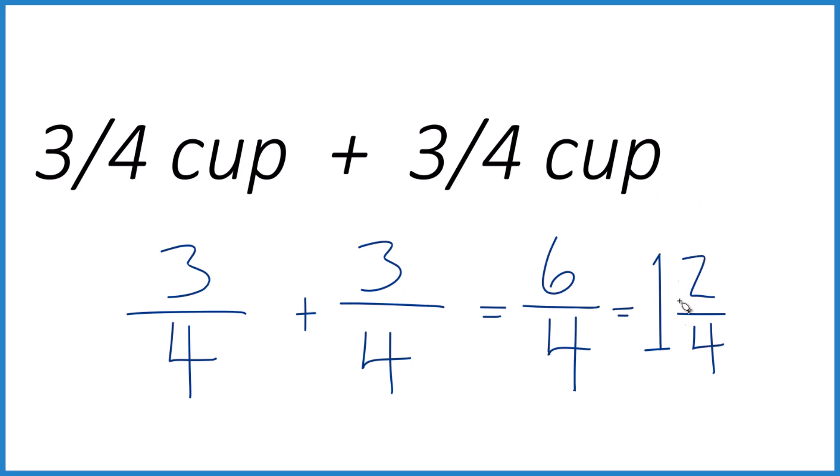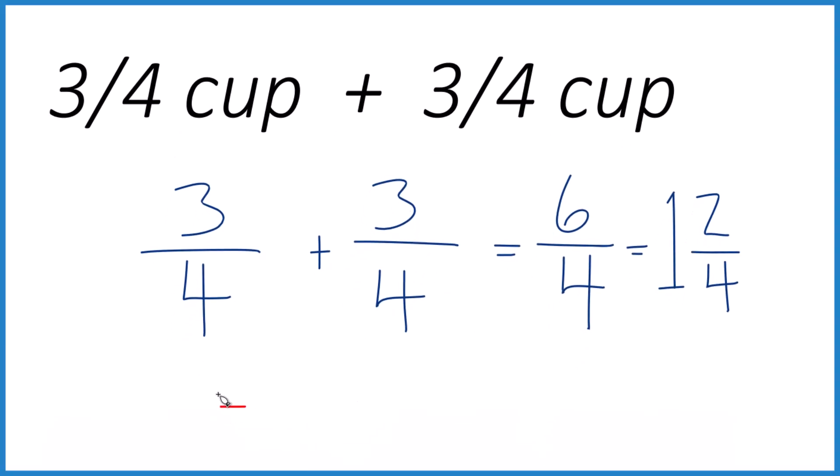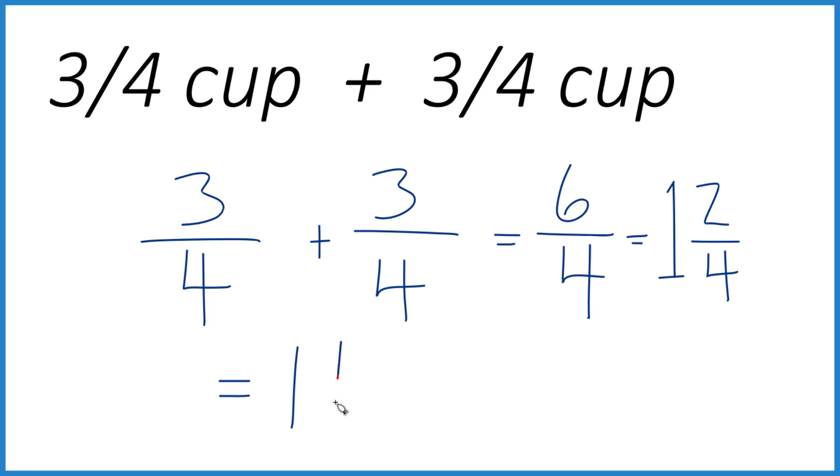And we can even reduce this down further, because 2 fourths, that's the same as 1 half. So we could write this as 1 and 1 half. So 3 fourths cup plus 3 fourths cup,